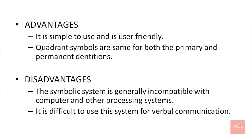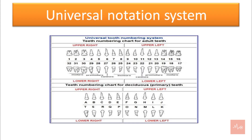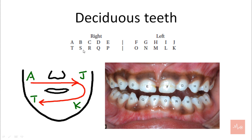Now next we move on to the Universal notation system. In the Universal notation system, deciduous teeth are represented by alphabets, but here every deciduous tooth has a specific alphabet given to it. It starts from A, that is the upper right second molar, goes to J, that is the upper left second molar, goes down to K in the lower left quadrant, and then it moves on to T, that is the second molar of the lower right quadrant. All the teeth are represented with specific alphabets.